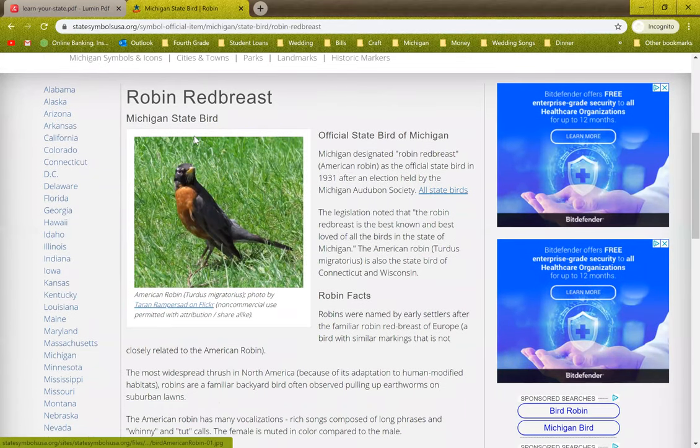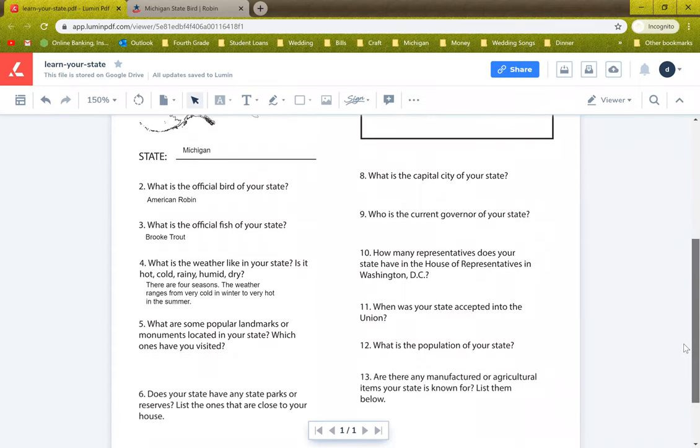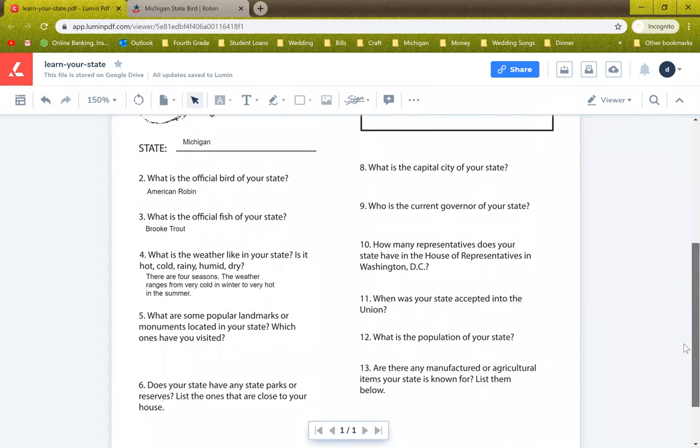Right here I see Michigan state bird. It became the official state bird in 1931. That's really interesting because I never knew that before. I didn't even honestly know what our state bird was. I also looked up Michigan's official fish, the brook trout. The weather in the state, there are four seasons. The weather ranges from very cold in winter to very hot in summer.